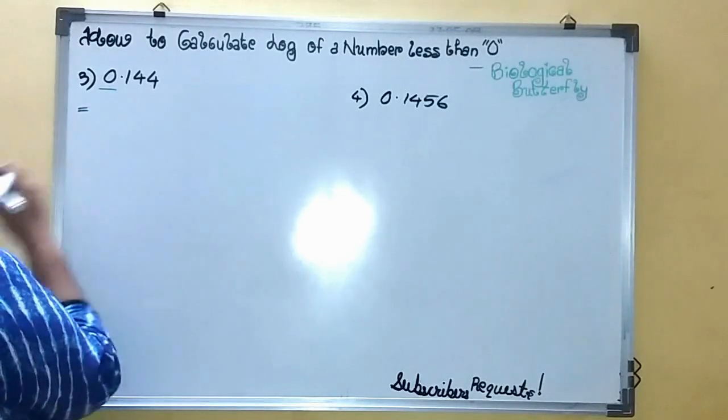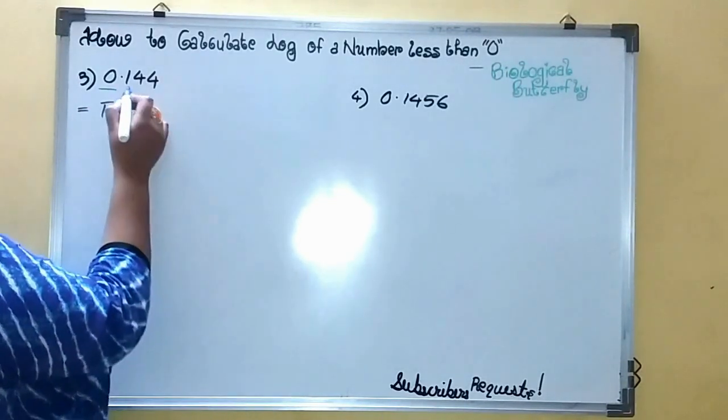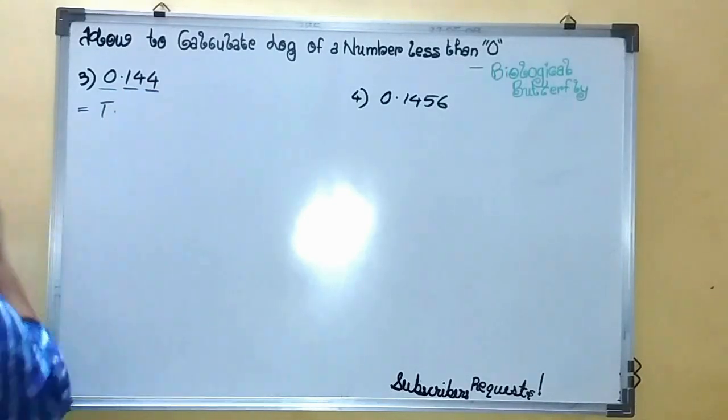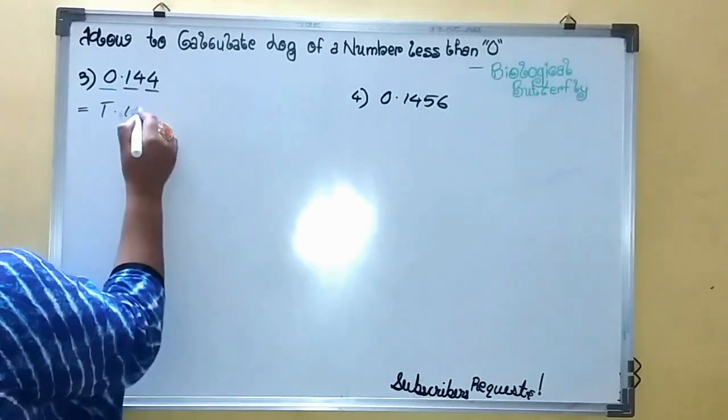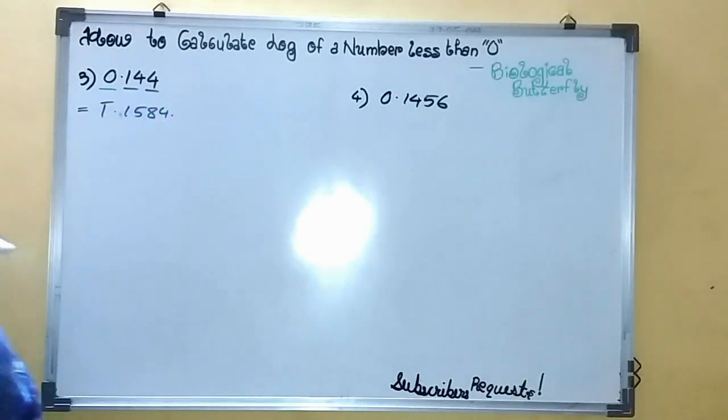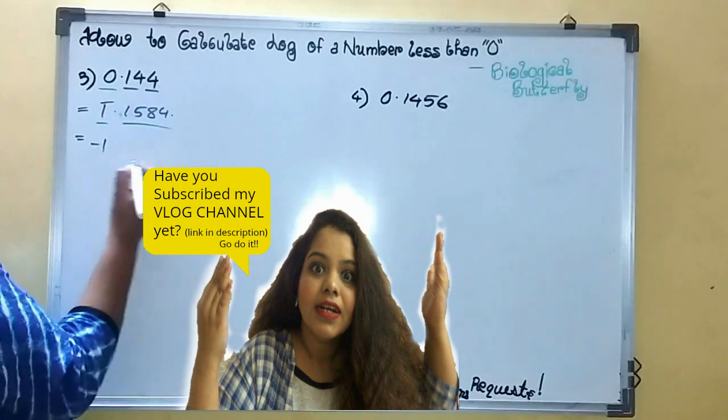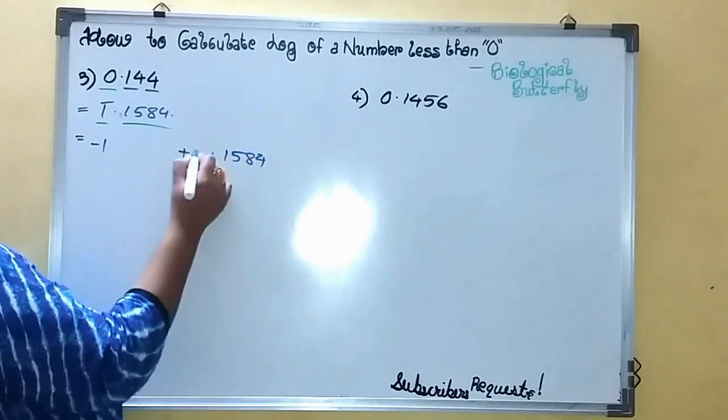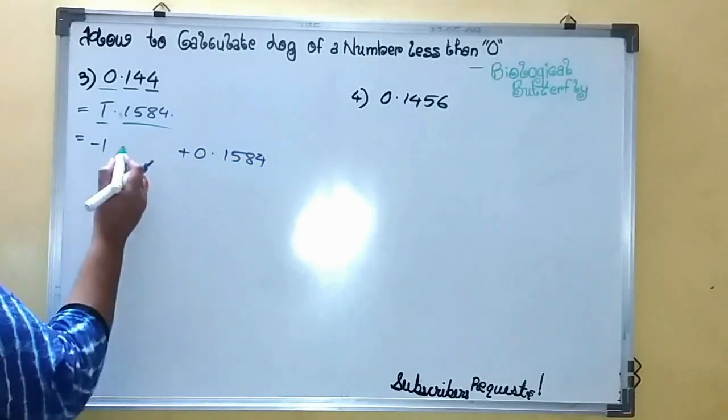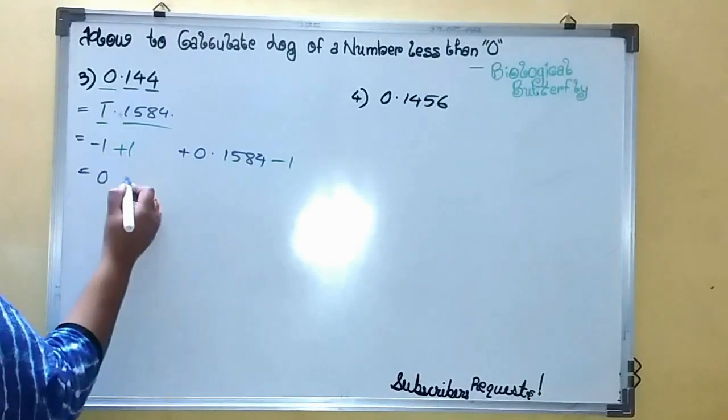One more: counting the number of zeros and converting it into bar. Calculate log of 14, which is 1.1461. Then bifurcate: minus 1, add 0 here, add 1 here, minus 1 here. It becomes 0 plus the value.